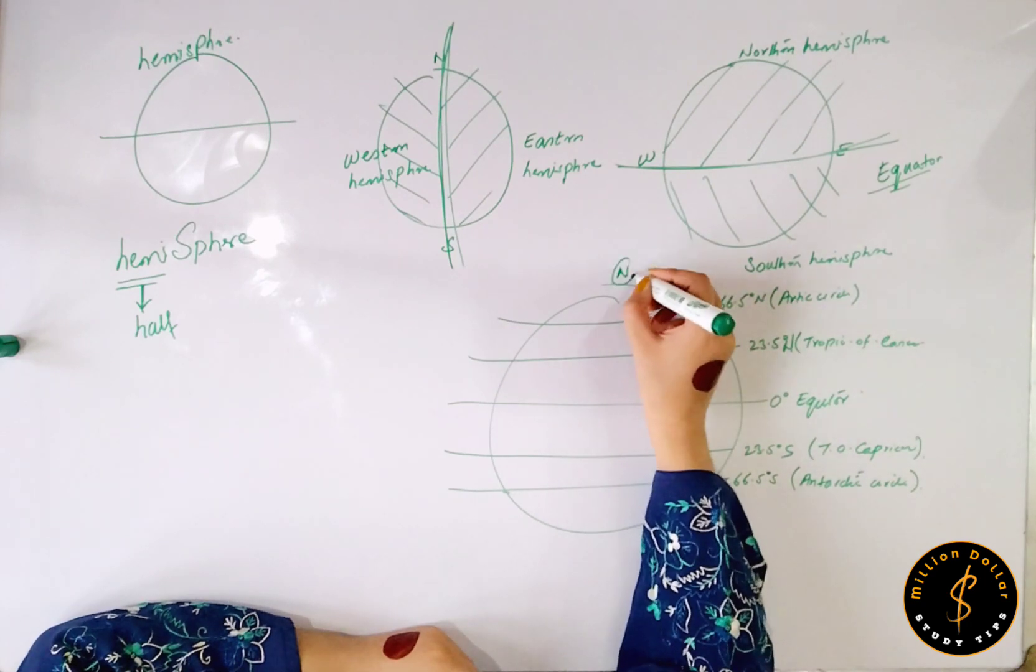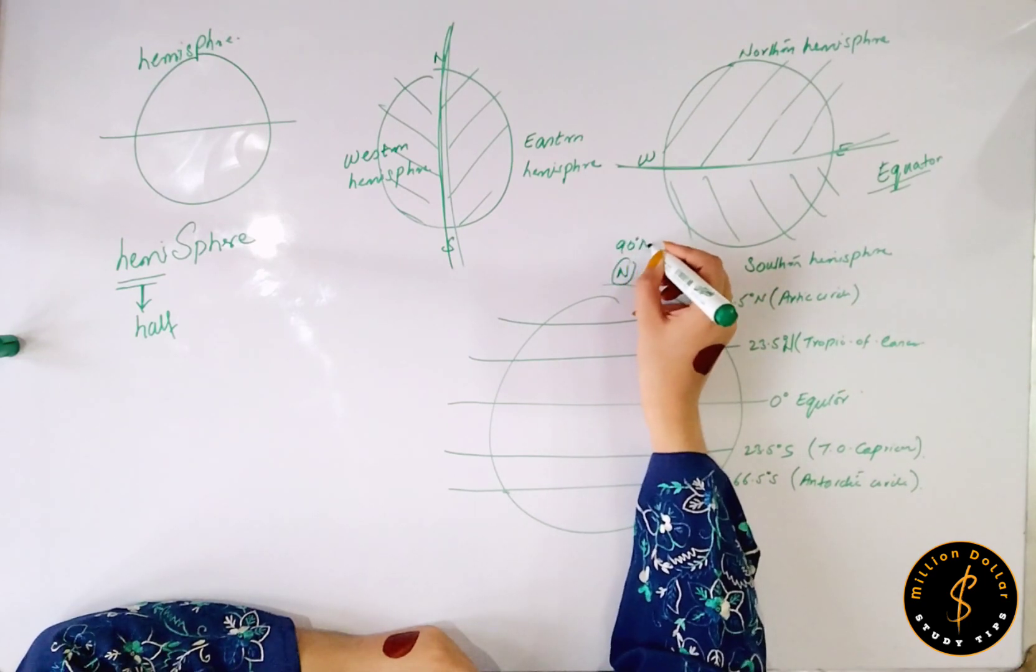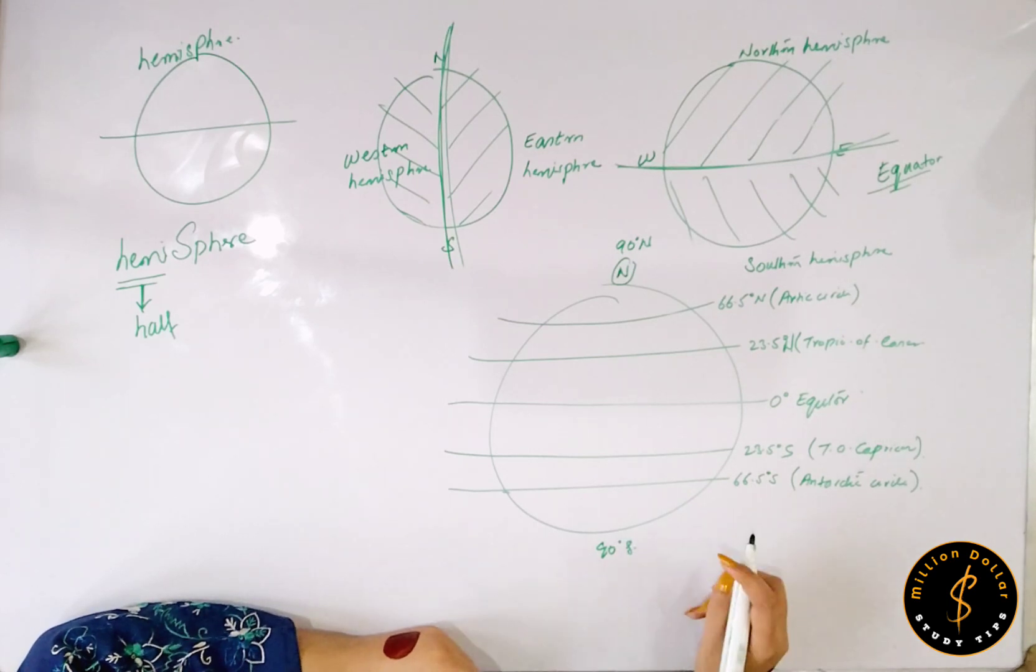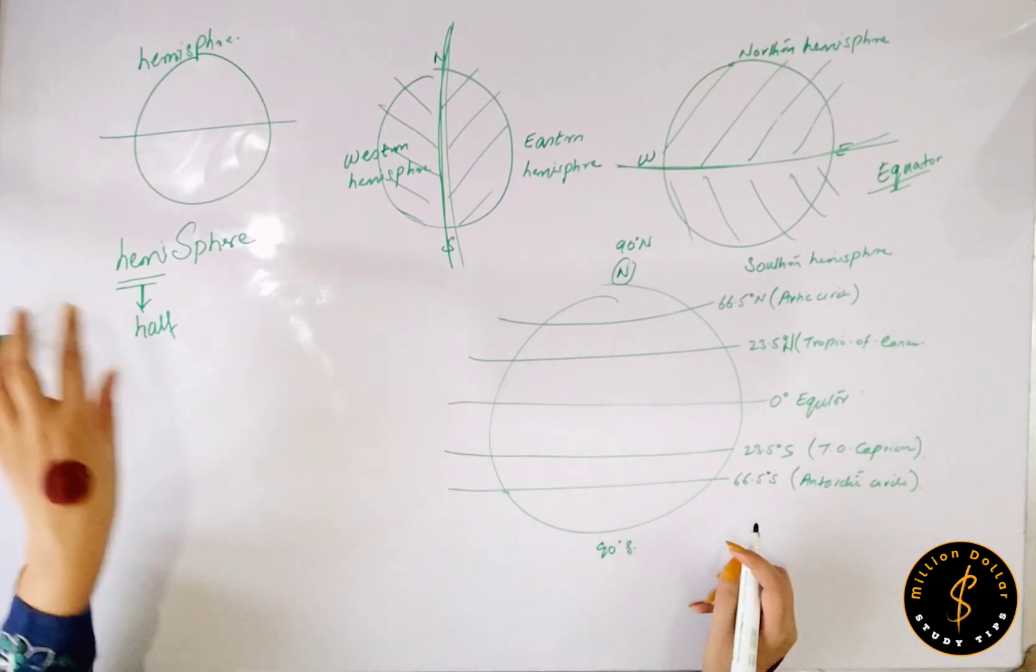Here you have north at 90 degree north, and here we have 90 degree south.